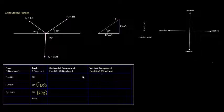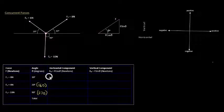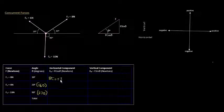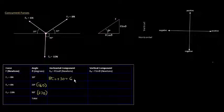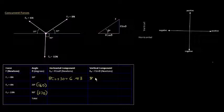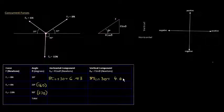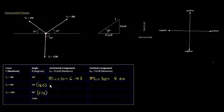Starting with F1, the horizontal component is 8 cos 30, which gives us 6.93 to 2 decimal places. And the vertical component is 8 sin 30, which gives us 4.0 to 2 decimal places. Ideally we should work to 3 or 4 decimal places for a more precise result.